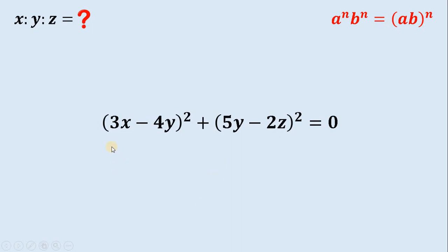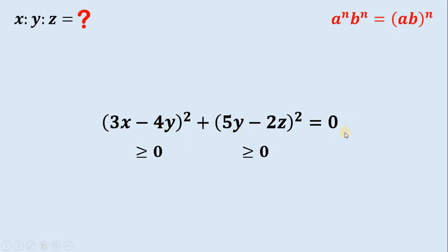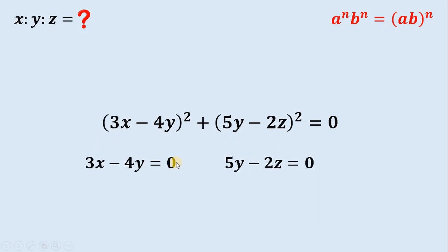Our equation now becomes: 3x minus 4y quantity squared plus 5y minus 2z quantity squared equals 0. Take note: since these are squared values, each must be greater than or equal to 0. Since the right-hand side equals 0, the only scenario where the sum of these squared numbers equals 0 is when 3x minus 4y equals 0 and 5y minus 2z also equals 0, so that 0 plus 0 equals 0.